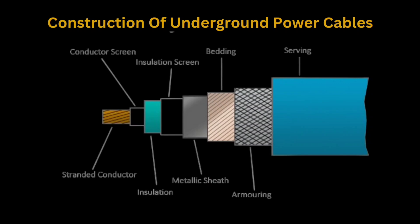Construction of underground power cables includes the following layers: conductor, conductor screen, insulation, insulation screen, metallic sheath, bedding, armoring, and serving.